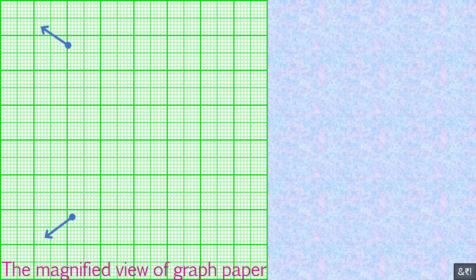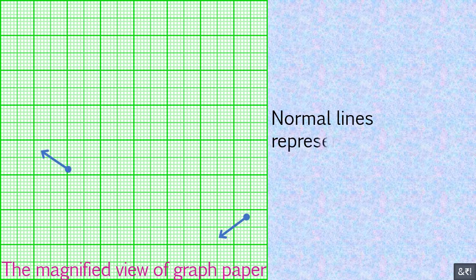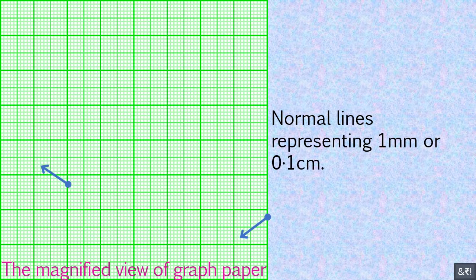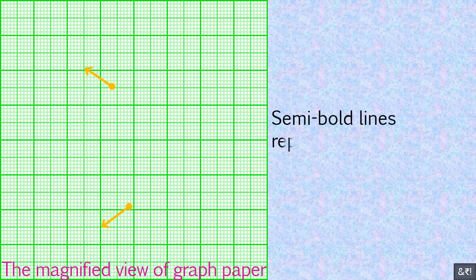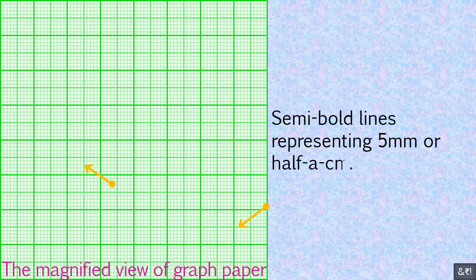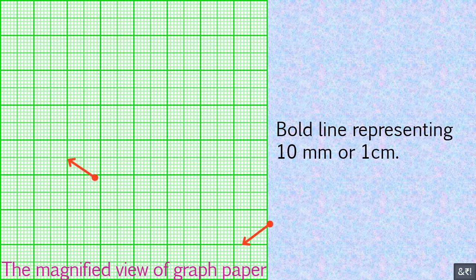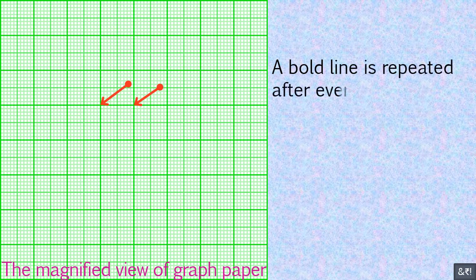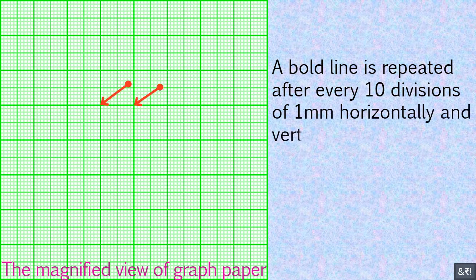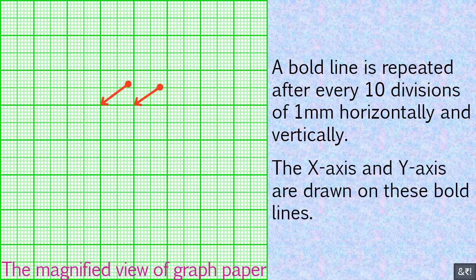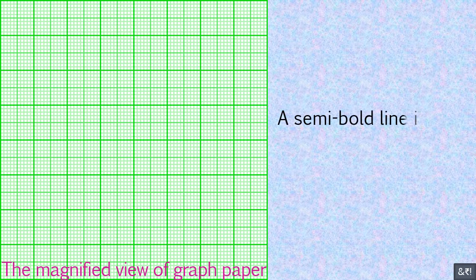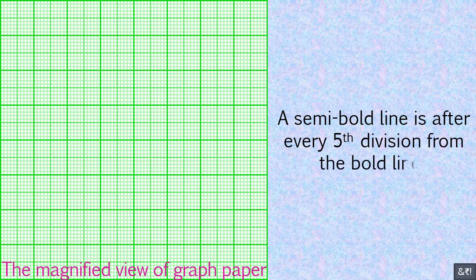Let us first become familiar with the graph paper. In the magnified view of graph paper: normal lines represent 1 mm or 0.1 cm; semi-bold lines represent 5 mm or half a cm; bold lines represent 10 mm or 1 cm. A bold line is repeated after every 10 divisions of 1 mm, horizontally and vertically. The x-axis and y-axis are drawn on these bold lines. A semi-bold line appears after every fifth division from the bold line.